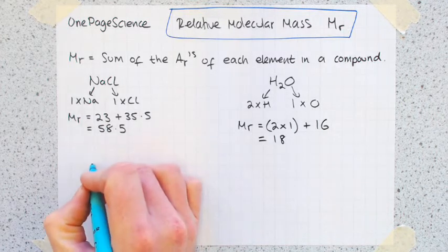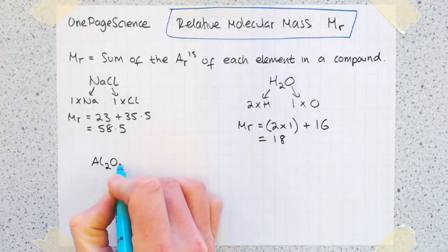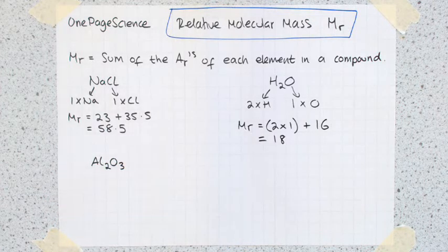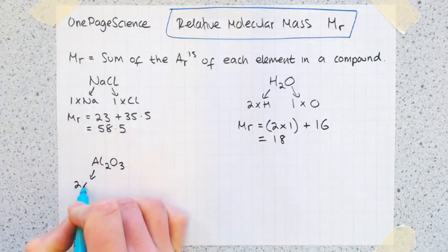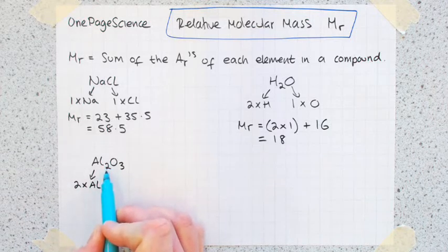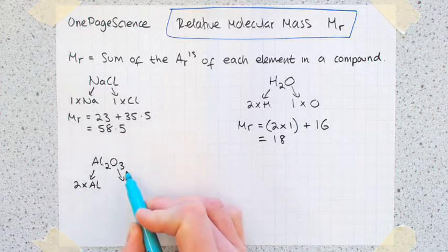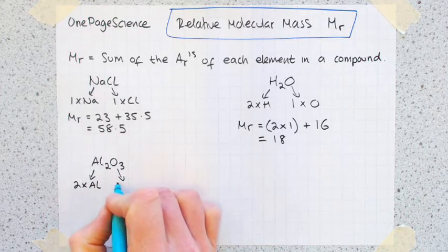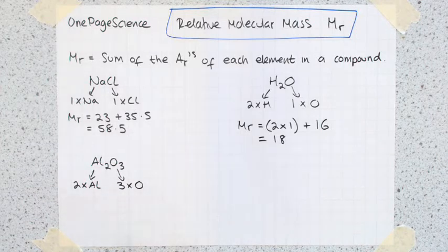I'm going to go to another one, something slightly more complicated this time, with more elements in it. So Al2O3, aluminium oxide. What this formula here is telling you is that you have two aluminiums. This two here means you've got two aluminiums. The three here is telling you you've got three oxygens, so three times oxygen.